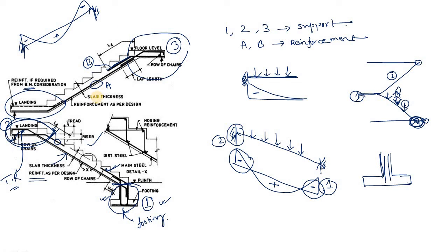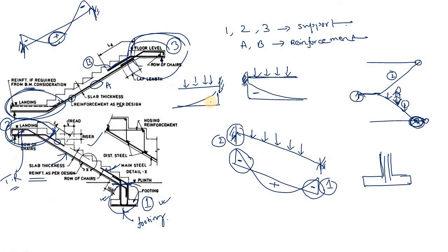The negative bending moment at the top support of flight two is confirmed, so top reinforcement is required there. Along the span of flight two, the tension occurs at the bottom, so reinforcement as per design is provided at the bottom. If you look at the top support in more detail, the actual fixity is here and this part is acting as a cantilever — in a cantilever the bending moment puts tension at the top, which is why an extra top bar has been provided there.